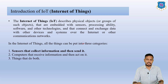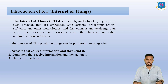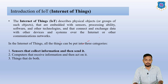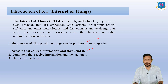Internet of Things is divided into three categories. Number one: sensors that collect information and then send it — for example, PIR sensors and gas sensors, which can detect various types of gases. Number two: computers that receive information and then act on it. Number three: things that do both — collect information and act on it.